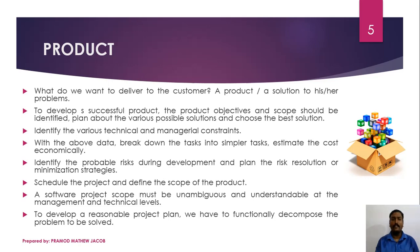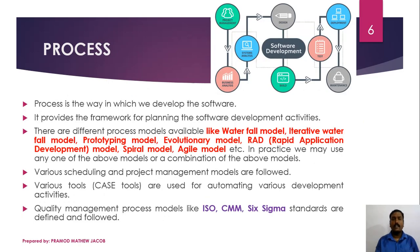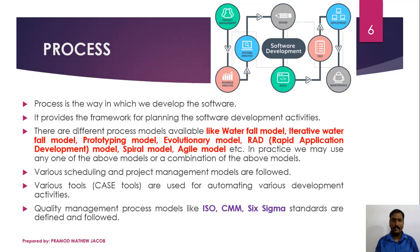The third influencing parameter is Process — the way in which we develop the software. We have already learned various software process models like the Waterfall model, Prototyping model, Spiral model, Rapid Application Development model, and Agile model. We must identify which model is best suited for our particular project; in some cases we may even use a combination of two or more models.